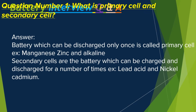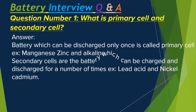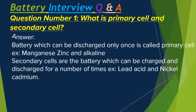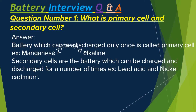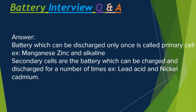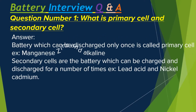Question number one: What is a primary cell and secondary cell? A battery which can be discharged only once is called a primary cell. Examples are manganese zinc and alkaline. The second type is a secondary cell. Secondary cells are batteries which can be charged and discharged a number of times. Examples include lead acid and nickel cadmium battery.